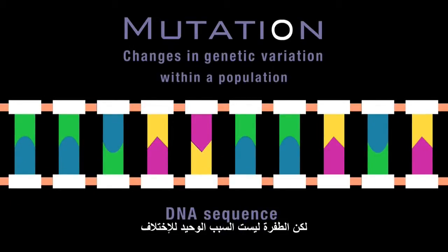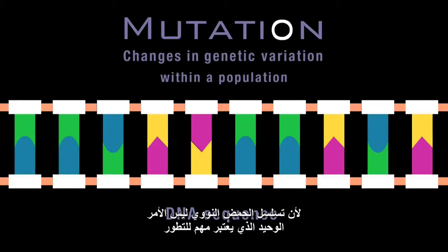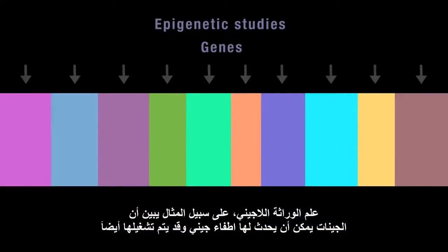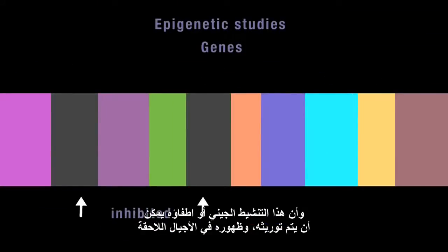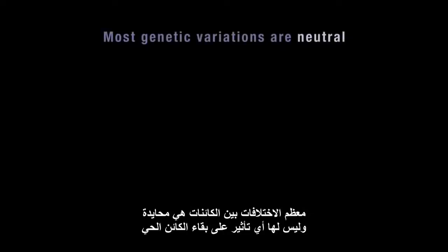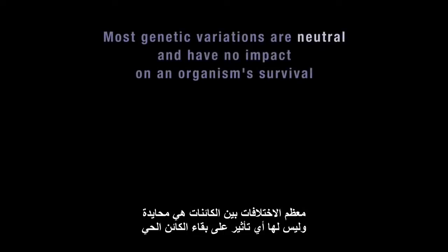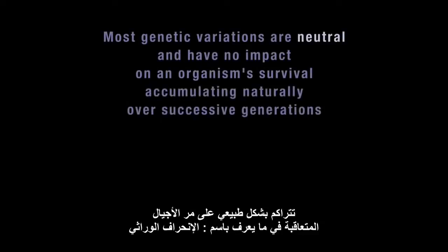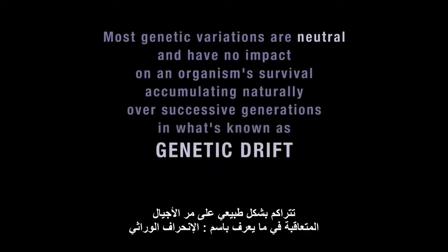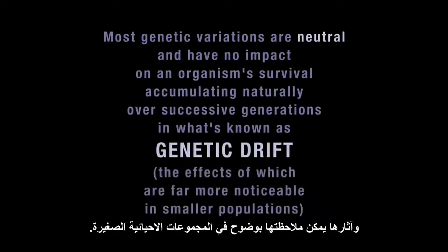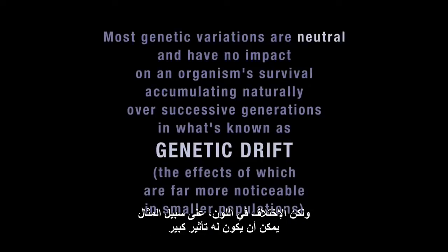Mutation isn't the only cause of variation, because it's not only the DNA sequence that's important to evolution. Epigenetic studies show that genes can be switched on or off, and that this genetic activation or inhibition can be inherited and expressed in later generations. Most variations are neutral and have no impact on an organism's survival, accumulating naturally over successive generations in what's known as genetic drift, the effects of which are far more noticeable in smaller populations.